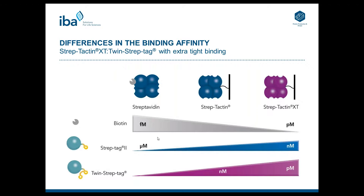In contrast, Streptag2 has a low binding affinity to Streptavidin, and due to an altered biotin binding pocket of Streptactin, the binding affinity for Streptag2 is increased. Streptag2 has a binding affinity to Streptactin XT in the nanomolar range. The same is true for Twin Streptag — it has a low binding affinity for Streptavidin, which is increased for Streptactin and Streptactin XT. The binding affinity for Streptactin XT is in the picomolar range.